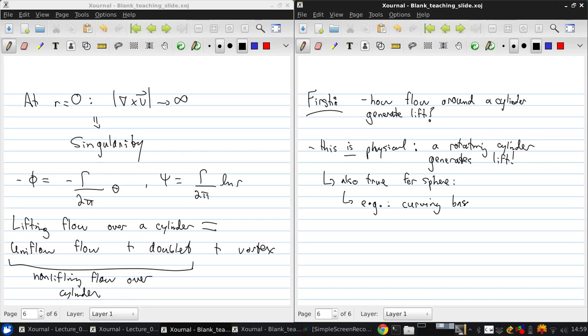So a curving baseball pitch, or a slice on a golf ball, or a topspin on a tennis ball. Those are all examples where the rotation of the sphere significantly alters the flow field around it, changing the flight of the ball. So this idea of the lifting flow over a cylinder is going to lead us directly to a way of computing the lift generated by airfoils.